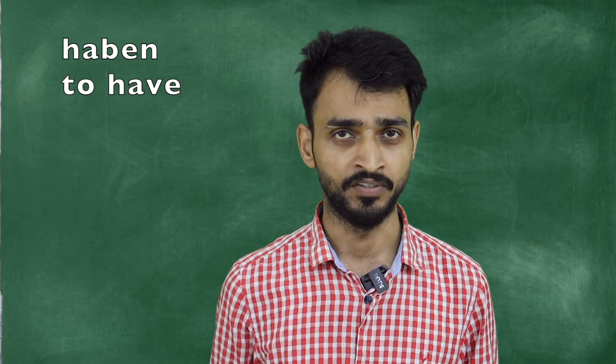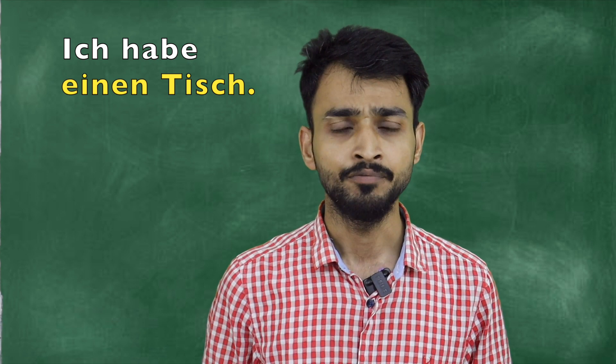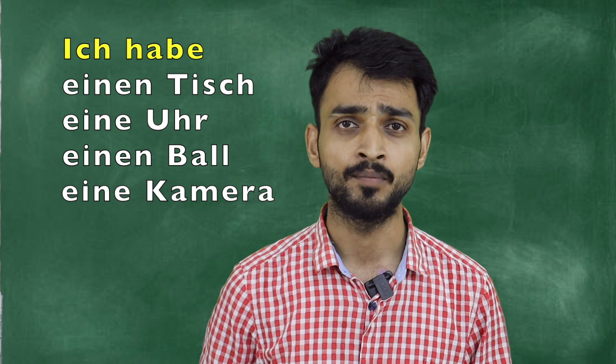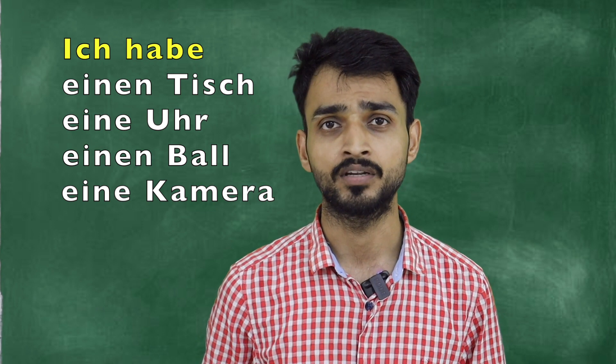Meanings are written in English too. So the first verb is 'haben' — to have. Basic verb. Like I say, 'I have a table' — Ich habe einen Tisch. If I say 'I have,' the sentence is not complete. I have to say what I have — a table, a sofa, a watch, a ball, a pen? I have to say something further. Ich habe einen Tisch — I have a table. This is the reason 'haben' is always an accusative verb.